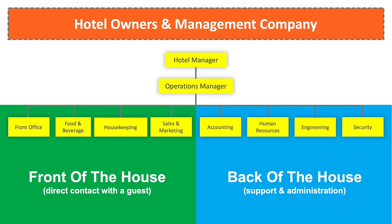Security protects hotel guests and their belongings, employees, and the entire hotel property. Typically, hotel security staff do not carry firearms. Their primary responsibility is to perform surveillance, prevent incidents, and report. By having a clear idea of hotel departments and their responsibilities, you can pick the right department and prepare a career development plan that will help you succeed.